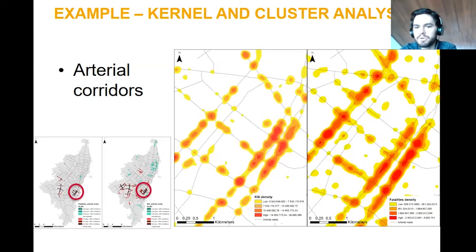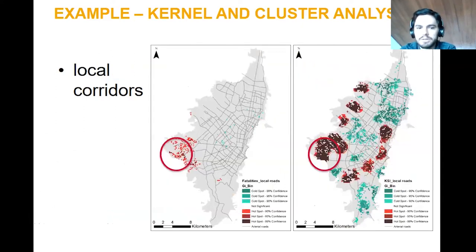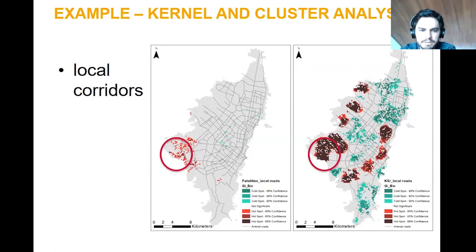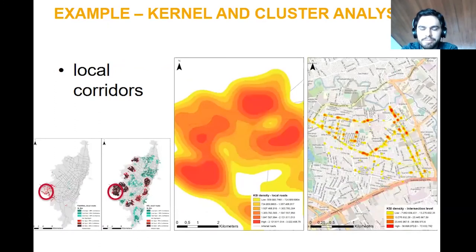Another example for local corridors: the hotspots are in the outskirts and low income areas. We have both hotspots for fatalities and killed and seriously injured (KSI). At the neighborhood level you can see where it's happening, and also at the intersection level what's going on.